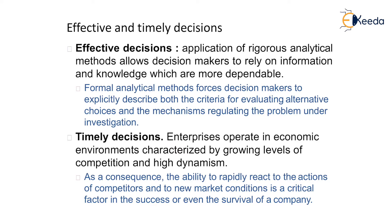There are two possibilities of a decision. First, effective decision: the application of rigorous analytical methods allows a decision maker to rely on information and knowledge which are more dependable. A formal analytical method forces the decision maker to explicitly decide both the criteria for evaluating alternative choices and the mechanism regulating the problem under investigation.